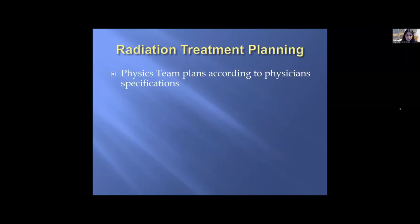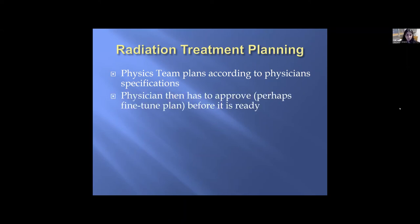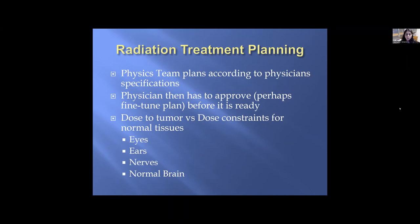The physics team plans according to the physician's specifications — delivering the prescribed dose to the tumor and meeting accepted dose constraints for normal structures. The physician must approve and may fine-tune the plan, after which the physicist performs quality checks. This process is why it takes about five business days to get a plan ready before the patient begins treatment.